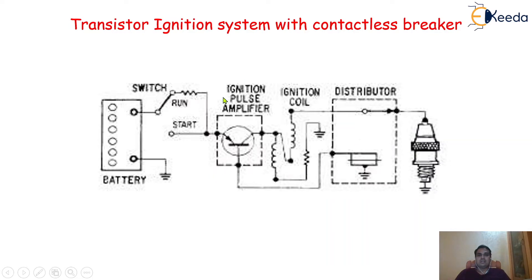The transistor present here has a base, an emitter, and a collector. Here is the battery, and one end of the battery is connected to the switch, and through the switch it is connected to this particular transistor system.